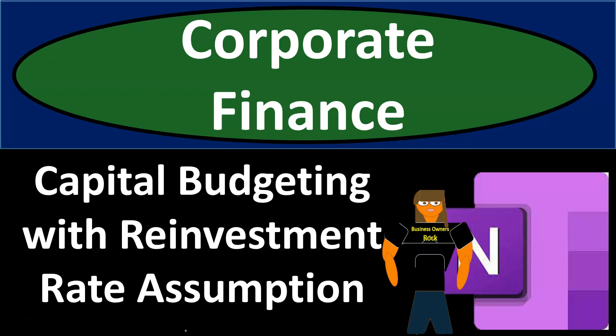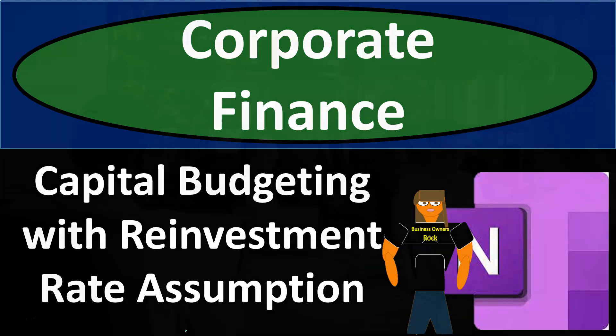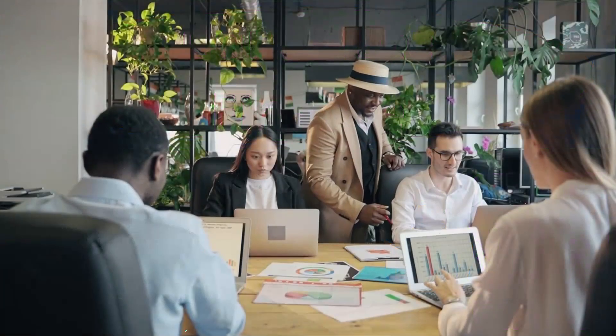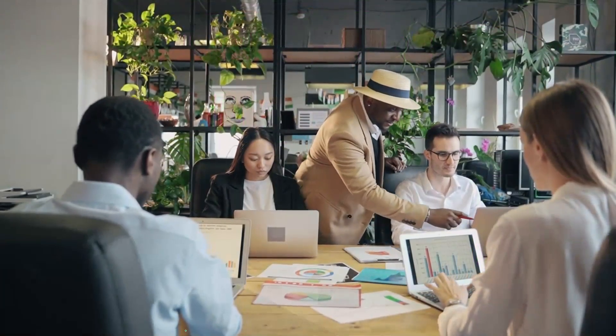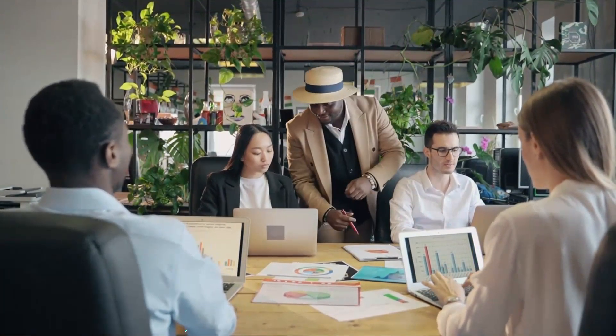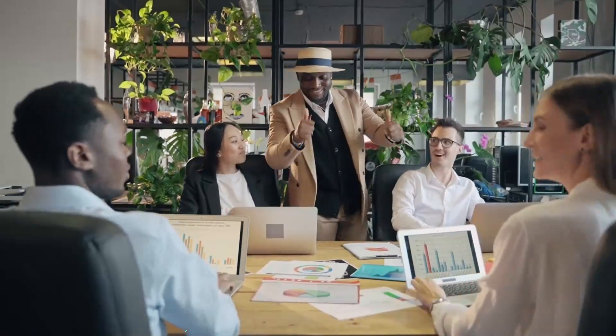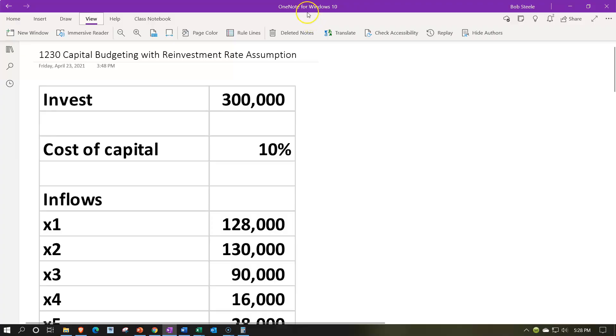This is a corporate finance practice problem using OneNote, covering capital budgeting with a reinvestment rate assumption. We're in OneNote — if you have access and would like to follow along, we're in the icon on the left-hand side, under the practice problems tab, in the 1230 capital budgeting with reinvestment rate assumption tab.